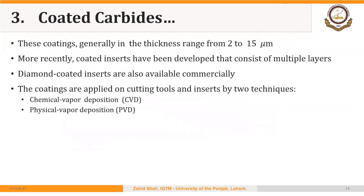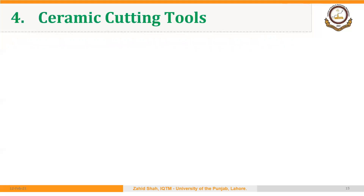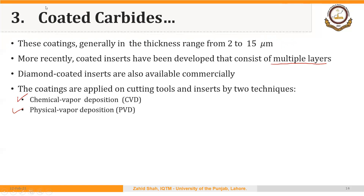These coatings are generally in the thickness range from 2 to 15 micrometers. We can apply single or multiple layers of coating — as we saw, even triple coating is possible. Coatings are applied using either chemical vapor deposition (CVD) or physical vapor deposition (PVD). In the next segment, we will discuss ceramic cutting tool materials. Thank you very much.